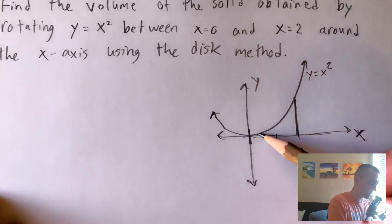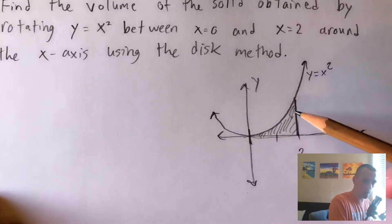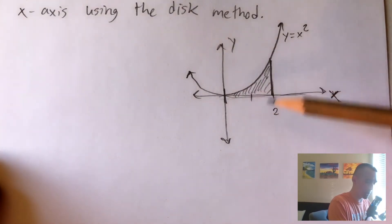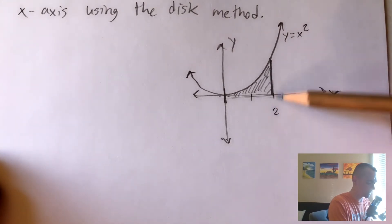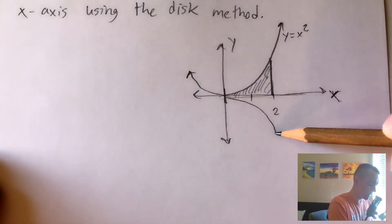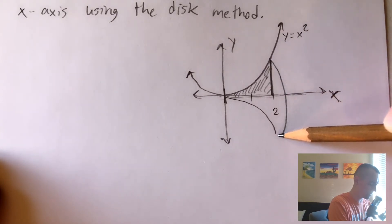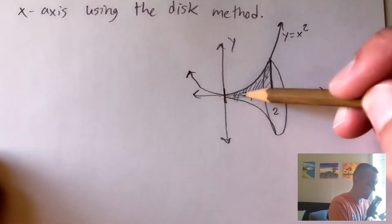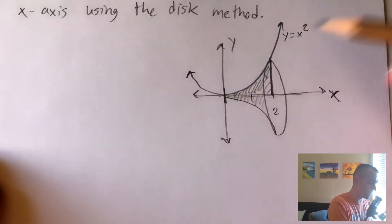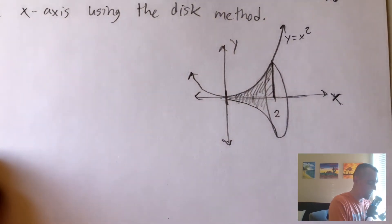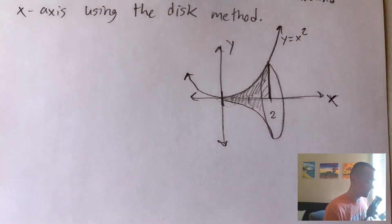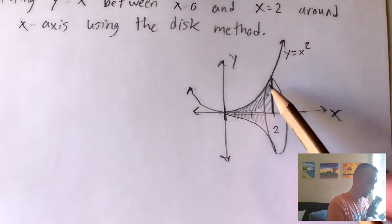We want to rotate this portion around the x-axis. So imagine this area coming off the paper, rotating around the x-axis going around in a circle. You can imagine this same shape coming down below, giving us a circular base. It creates almost like a cone shape, but obviously curved in a bit — a 3D cone-like shape from rotating this portion of the function around the x-axis.